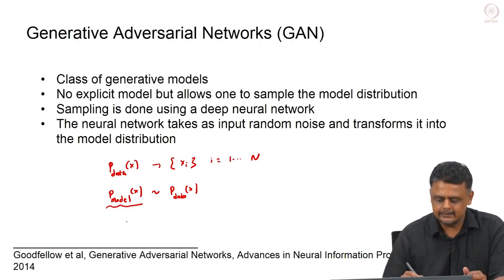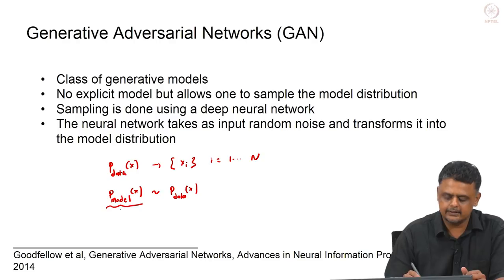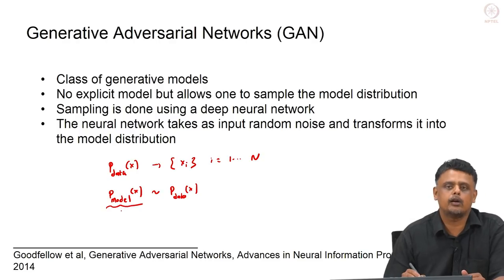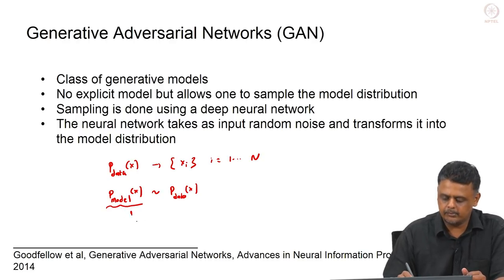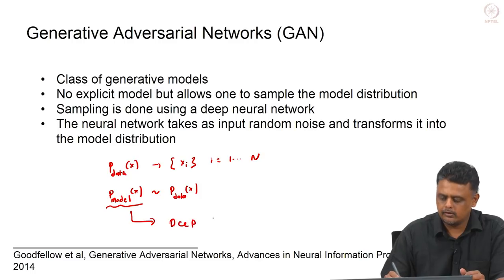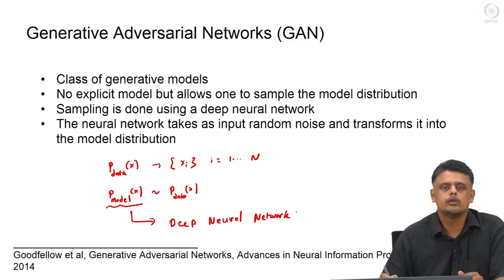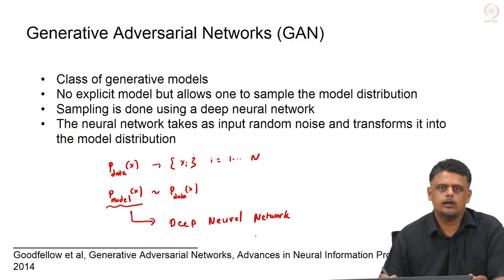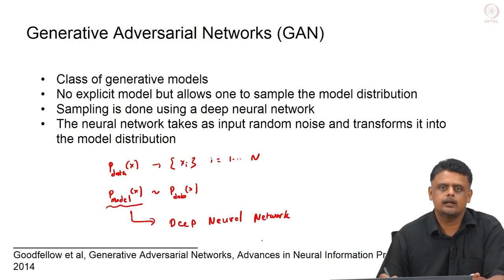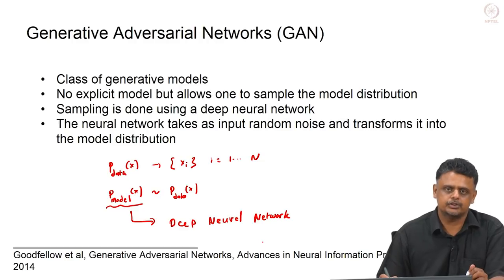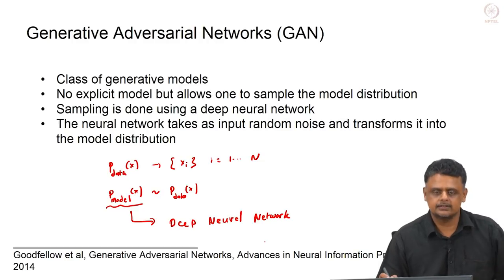In this case we do not explicitly model the distribution — in the sense it is not a parametric model — but rather this is accomplished using a deep neural network. The neural network actually generates a sample from the model distribution, and we will see how this is done.